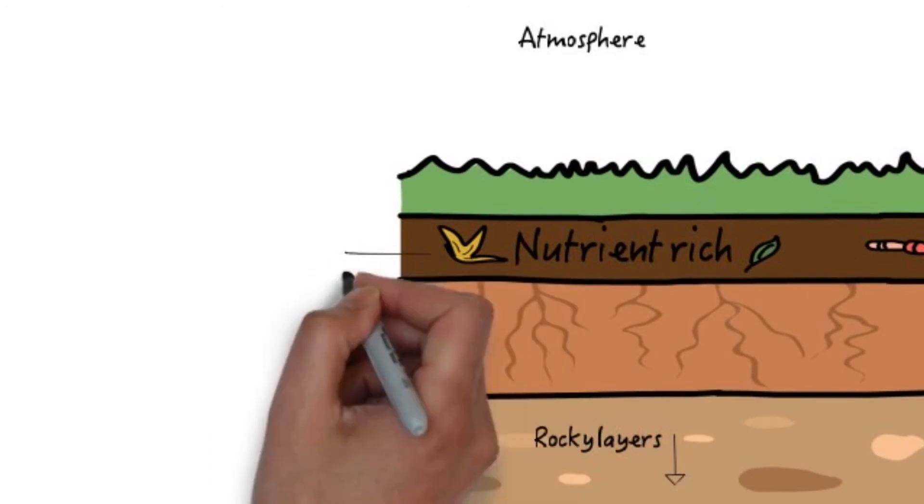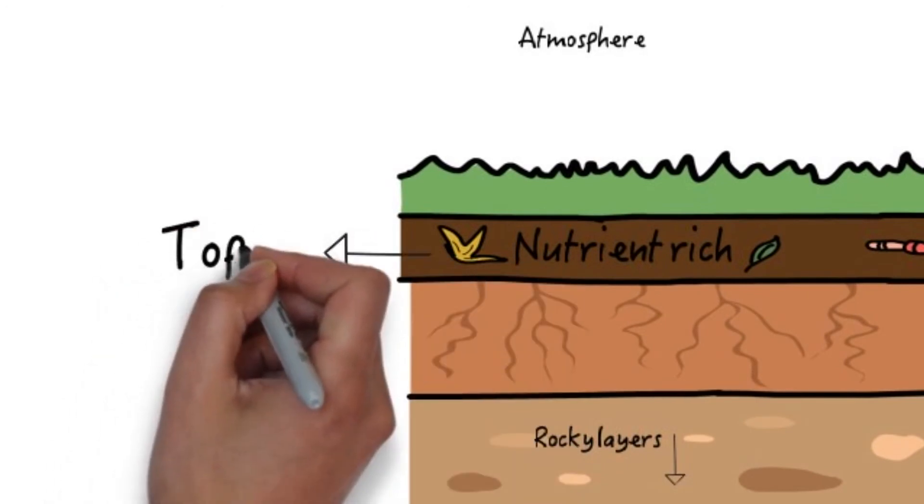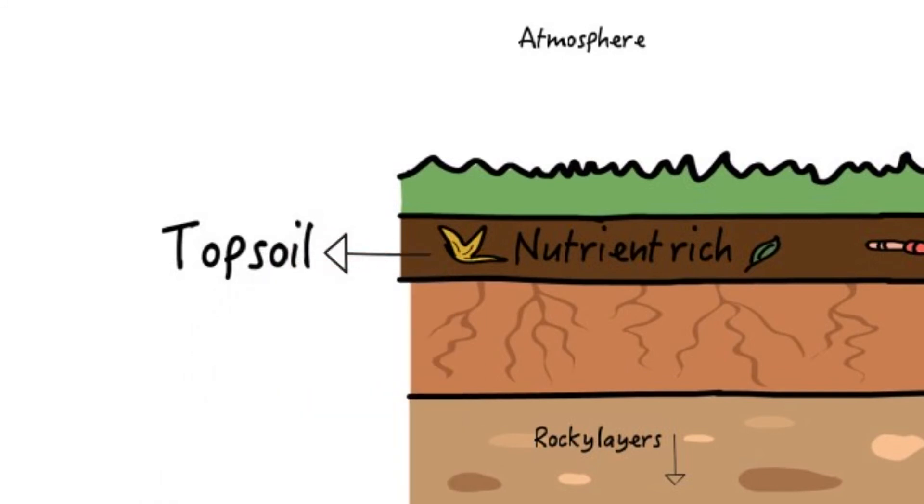We organize soil into different layers. The first layer, which is located at the top, is called topsoil. The topsoil layer contains rock particles and the remains of plants and animals. Plants grow in the topsoil.